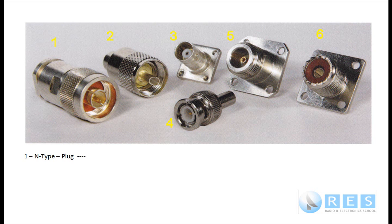The N-type plug is number one, and number five is the N-type socket. Number two is a UHF plug — some people call it a PL259, and PL means plug by the way — but the proper name for it is just UHF plug. The socket for that is number six.